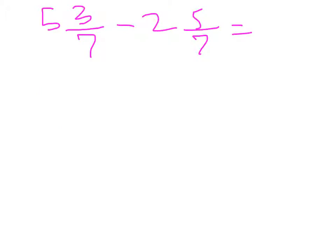Here we have 5 and 3 sevenths minus 2 and 5 sevenths. You can subtract from the whole numbers, but the fraction you can't subtract, so you've got to borrow. This turns to a 4.